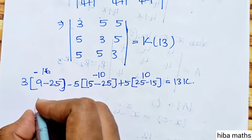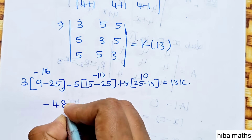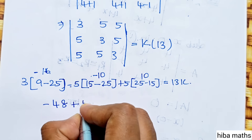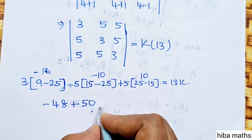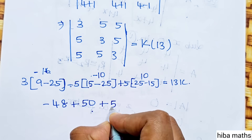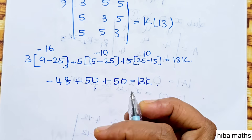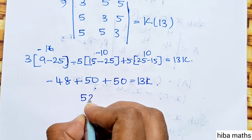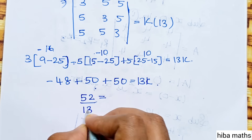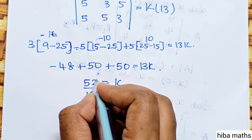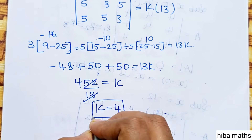So 16 into 3: 6 times 3 is 18, giving minus 48. Minus into minus is plus. 5 times 10 is 50, plus 5 times 10 is 50. So 50 equals 13k. 100 minus 48 is 52. Dividing by 13 equals k. 13 goes 4 times, so k value is 4.